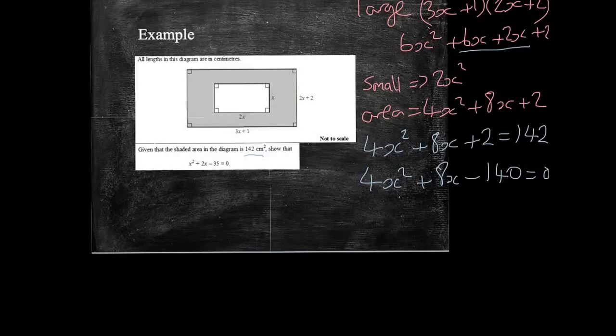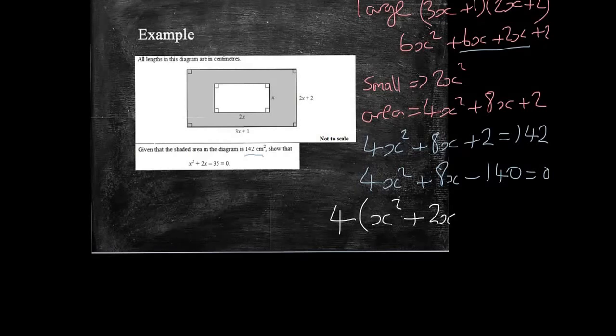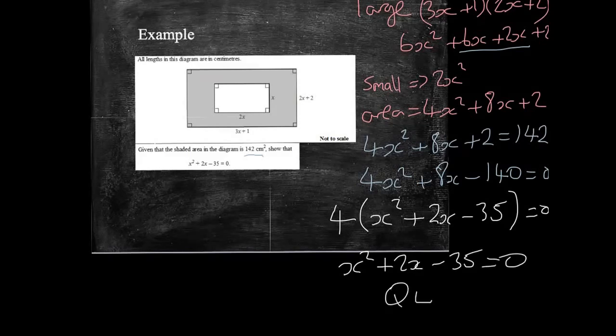We're starting to get somewhere close now. What do we have different between this that we're trying to show and what we've got here? I think I can take a factor of 4 out of this. So I can say 4 lots of x squared plus 2x minus 35 equals zero. And finally, if I divide both sides by 4, I can say I've got x squared plus 2x minus 35 equals zero. And this is what it was asking for in the question.